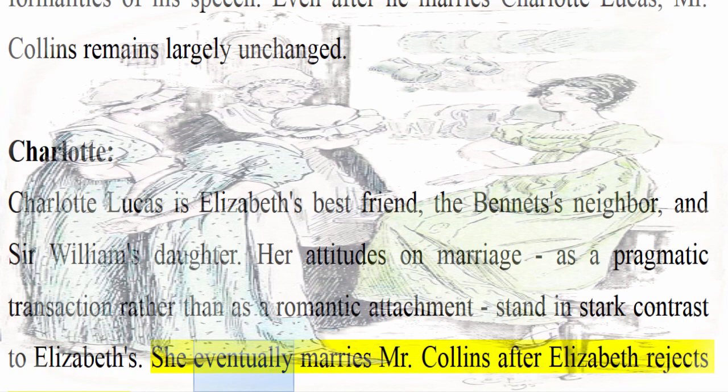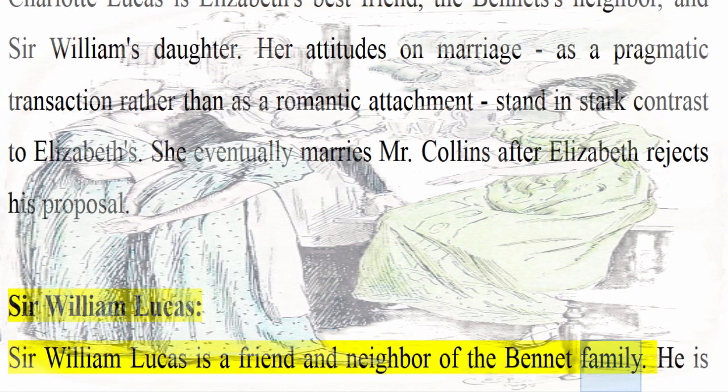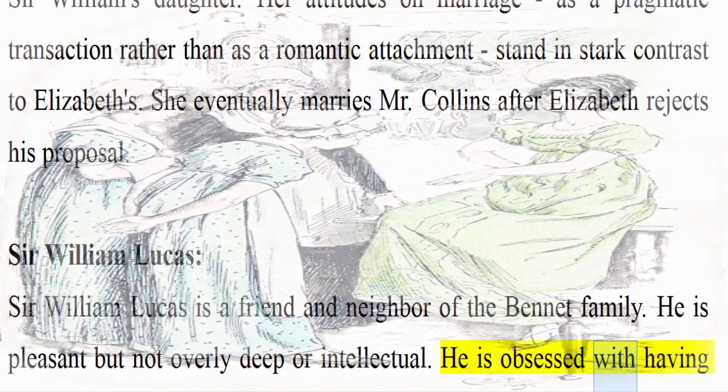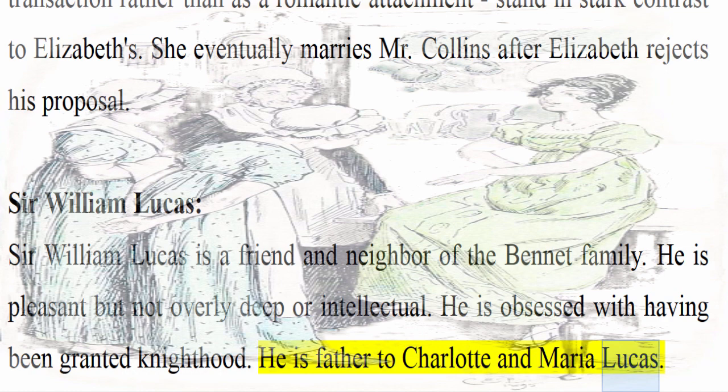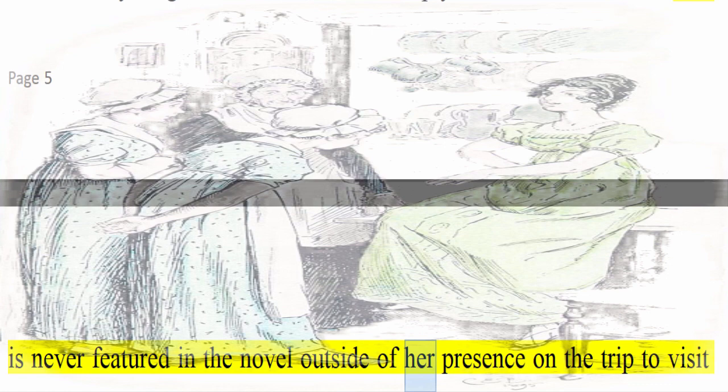Sir William Lucas: Sir William Lucas is a friend and neighbor of the Bennet family. He is pleasant but not overly deep or intellectual. He is obsessed with having been granted knighthood, and is father to Charlotte and Maria Lucas. Maria Lucas, Charlotte's younger sister, is as empty-headed as her father. She is never featured in the novel outside of her presence on the trip to visit Charlotte with Sir William and Elizabeth.